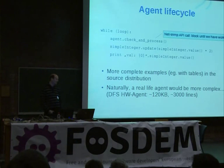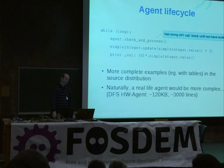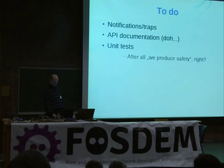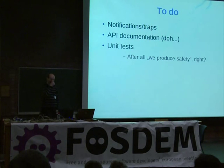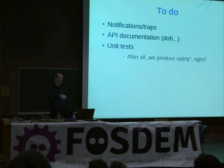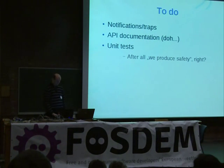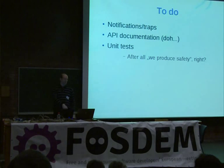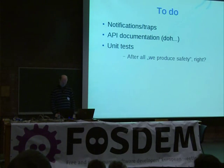The real-life agent is of course much more complex — the agent I wrote for internal use is about 120 kilobytes and 3,000 lines, because you want to do all the fancy stuff like daemonizing, logging, and so on. Some things are missing: notifications and traps in particular. As of now you can't write an agent that informs the master agent of a fan failure or anything like that. Also missing: API documentation, and maybe some unit tests — since after all we produce software, it would be nice to have tests.